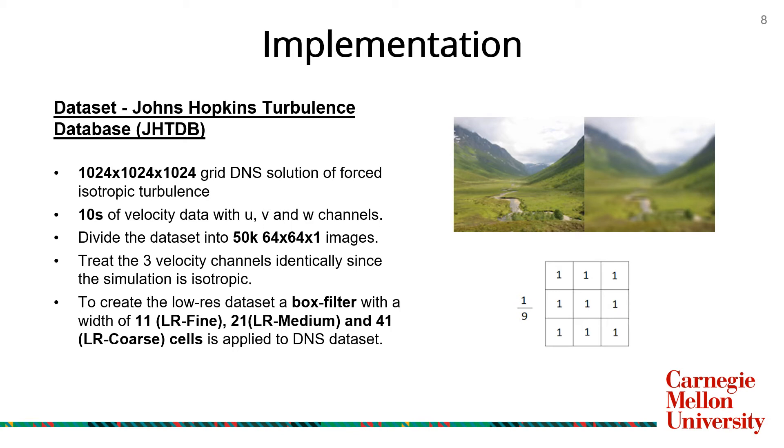This results in the loss of high-frequency features and yields spatially filtered data which mimics the solution obtained from a coarser grid. Depending on the degree of refinement, the three datasets are referred to as low-resolution fine, low-resolution medium, and low-resolution coarse respectively. The sample data is then divided into separate channels of XYZ velocities within 64 by 64 pixel regions. Thus, each dataset consists of 50,000 64 by 64 DNS and low-resolution snapshots.